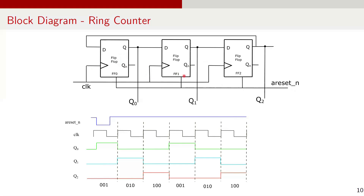The counter operates by shifting 1 around the flip-flops with each clock pulse. At the initial state, only FF0 output is high and FF1, FF2 are low. At the first clock pulse, FF0's output is fed to FF1, so FF1 stores 1 and the output is 010. In the second clock pulse, Q1 is fed to FF2 and the output state is 001. In the third clock pulse, FF2's output feeds back to FF0, so FF0 stores 1 and the sequence returns to 100. The counter continues cycling through the sequence 100, 010, 001 repeatedly with each clock pulse. The sequence length equals the number of flip-flops; for a 3-bit ring counter, the sequence length is 3.